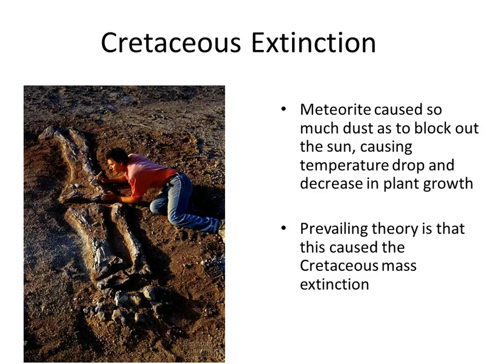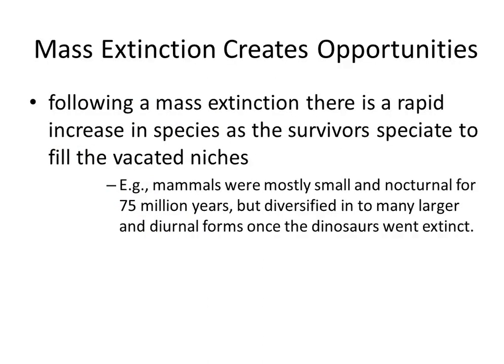The Cretaceous extinction: a meteorite caused so much dust as to block out the sun, causing temperature drop and decreased plant growth. The prevailing theory is that this caused the Cretaceous mass extinction. It created opportunities, because following a mass extinction there is a rapid increase in species as the survivors speciate to fill the vacated niches. For example, mammals were mostly small and nocturnal for 75 million years, but diversified into many larger and diurnal forms once the dinosaurs went extinct.